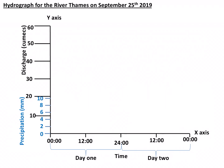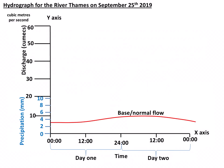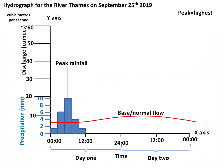If there was no rainfall event, then the river discharge would be flowing at base flow. However, our hydrograph is showing what happens when it has rained over an entire morning. The precipitation is shown as a bar graph. This bar graph shows that the peak rainfall was 10 millimetres at approximately 6am. As a result, the river discharge will increase as more water reaches the river channel.